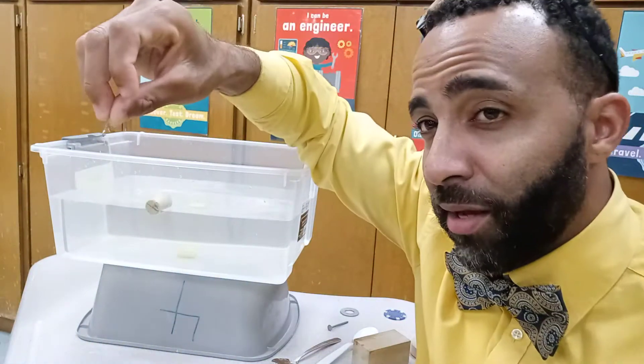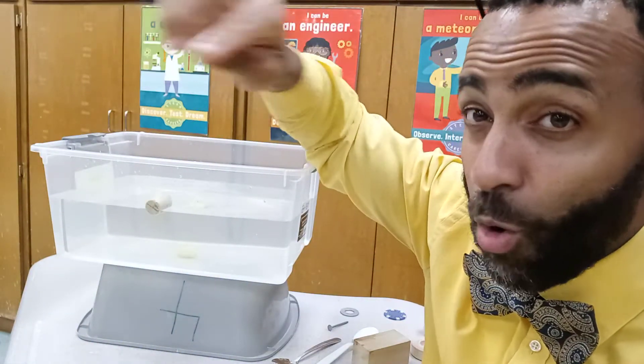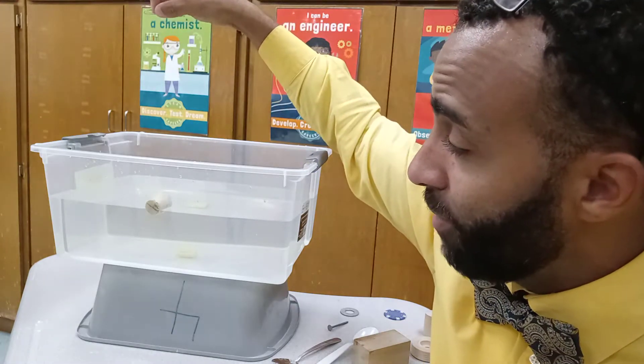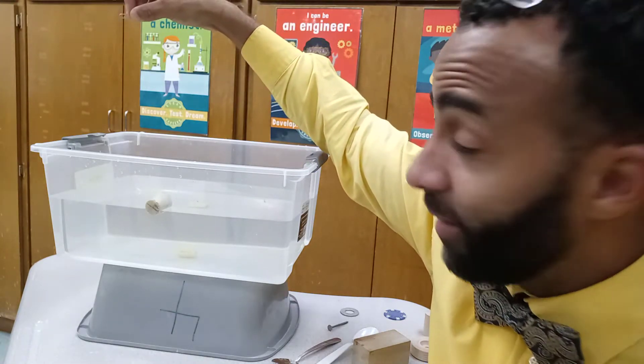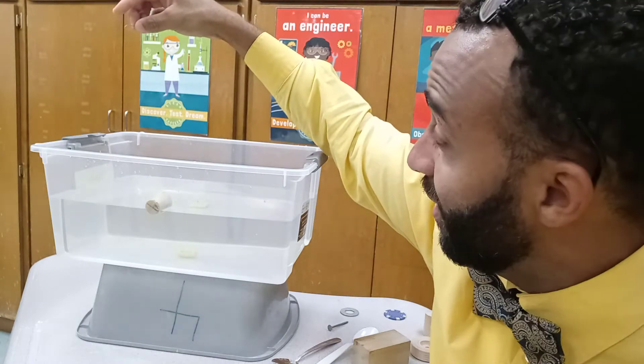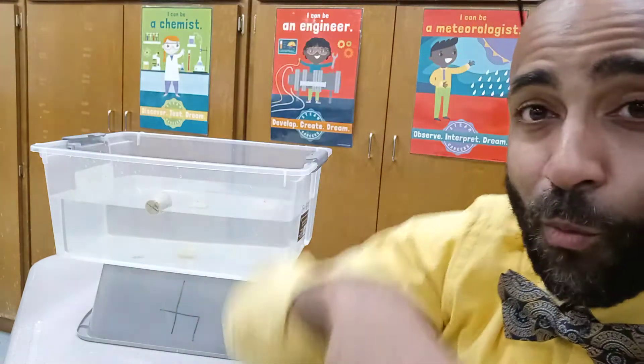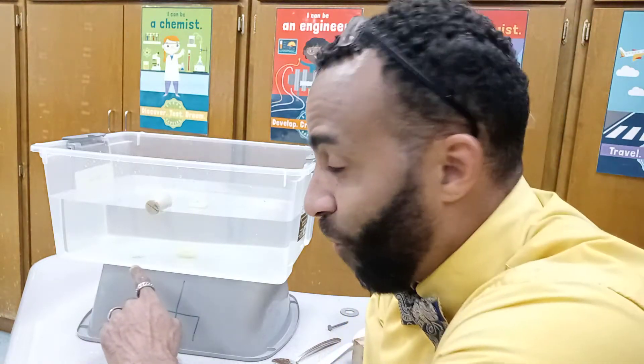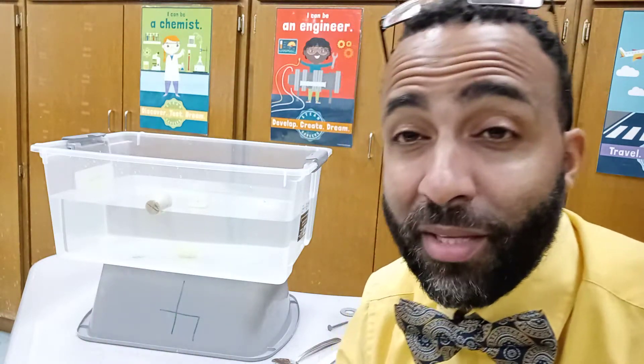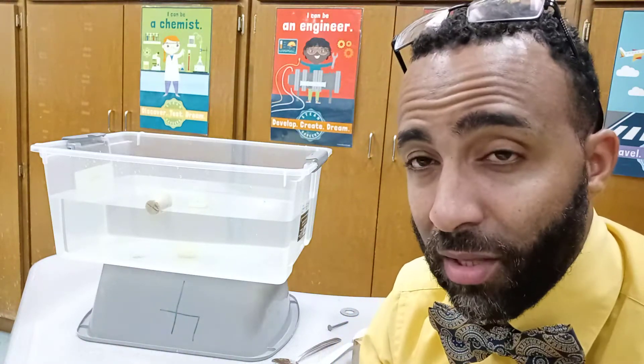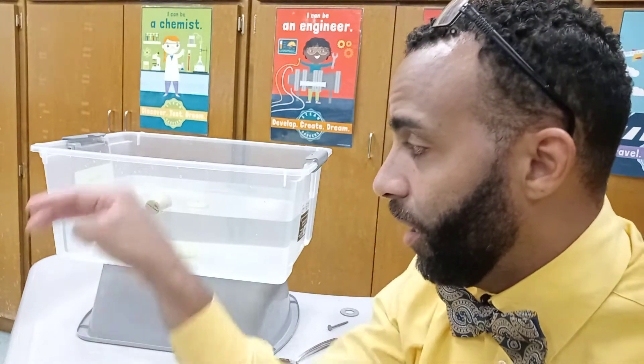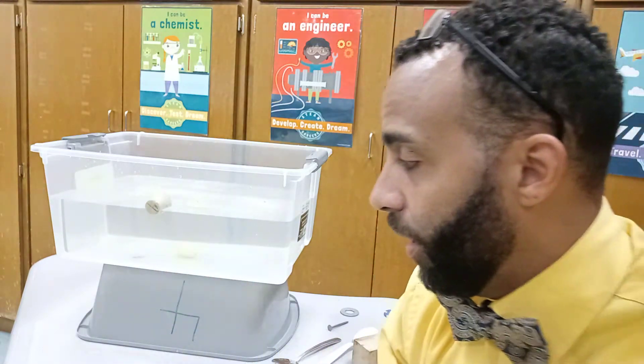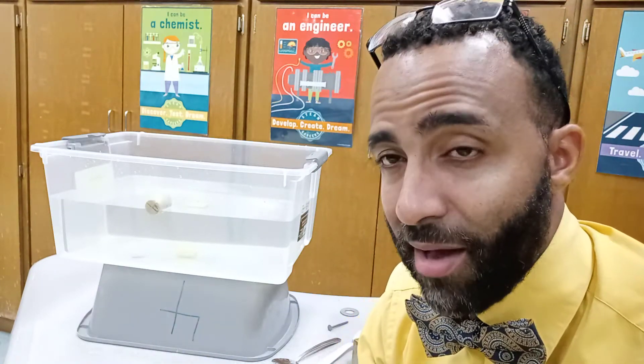All right, here we go. Paperclip. What are your predictions? Sink or float? Here we go. Five, four, three, two, one, zero. Whoa, that one sunk and it sunk fast. Paperclip is right here. So we can visibly see that a metal paperclip sank to the bottom, a wood cork floated and a plastic chip sank to the bottom.